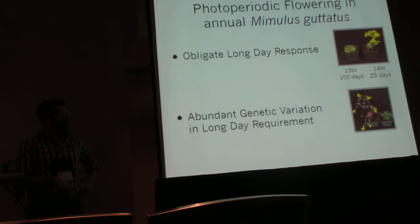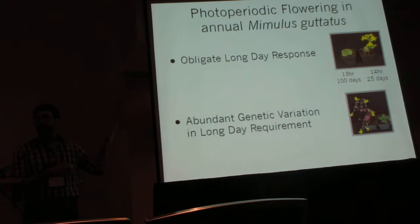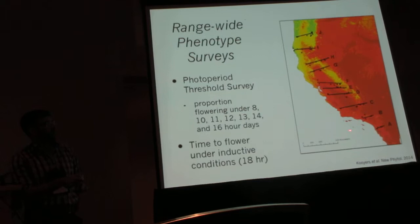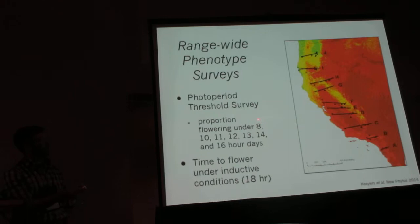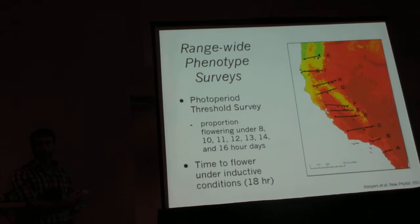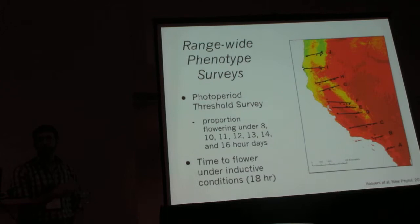To suss that out further, I did a road trip and collected populations from Southern California to Central Oregon, up and down the Sierras and the Cascades. I brought those plants back and grew up their progeny under a battery of photoperiod conditions from very short to very long days to measure the photoperiod thresholds of these populations. I also grew them in the greenhouse to look at variability in time to flower under inductive conditions.